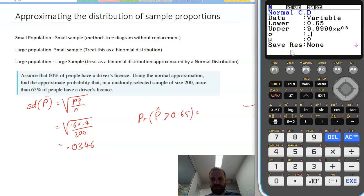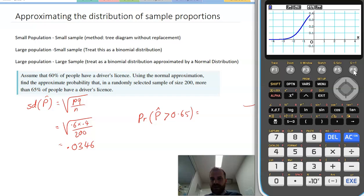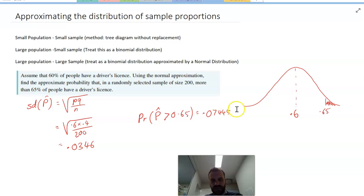And I need a mean and a standard deviation. My standard deviation is 0.034641 something. And my mean is 0.6 because that's the population mean. And I get a nice little drawing here with a population, with a probability of 0.07445. There's our answer there.